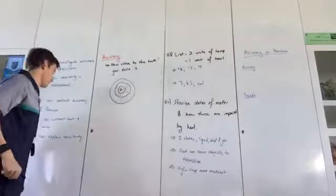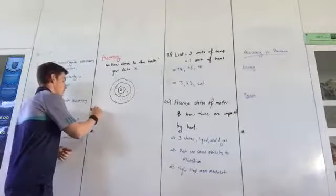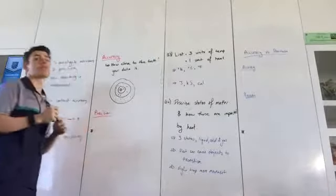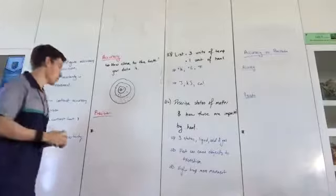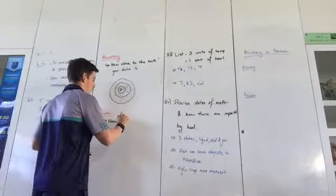Precision - how is that different? Would anyone like to venture a guess as to how precision is different from accuracy? Alex: Precision is how close the results are to each other. Perfect. Rather than how close to the truth they are, it's how close they are to each other.